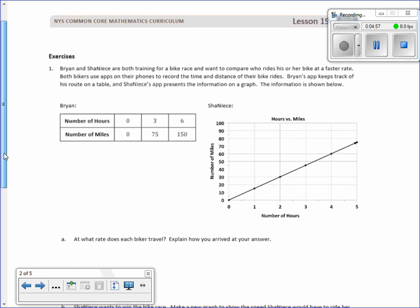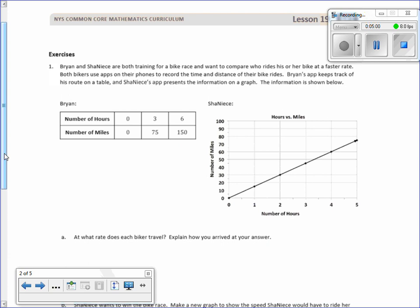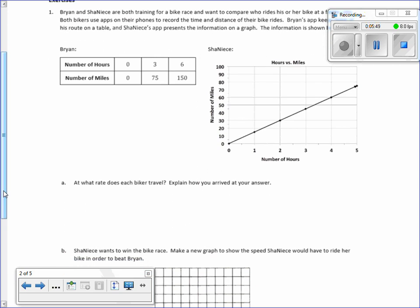Exercise one. So what do we have here? Before even reading this question, I'm looking at this. Brian has a table and Shanice has a graph on a coordinate plane. So we're comparing a table to a graph. Now let's take a look at the question. Bryan and Shanice are both training for a bike race and want to compare who rides his or her bike at a faster rate. Both bikers use apps on their phones to record the time and distance of their bike rides. Bryan's app keeps track of his route on a table, and Shanice's app represents the information on the graph. The information is shown below. The question says, at what rate does each biker travel? Explain how you arrived at your answer.